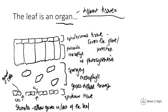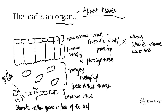Now we need to learn how each tissue is adapted for its function. The upper epidermis covers the plant and acts as a layer of protection. It's adapted by being covered in something called a waxy cuticle, which helps to reduce water loss.